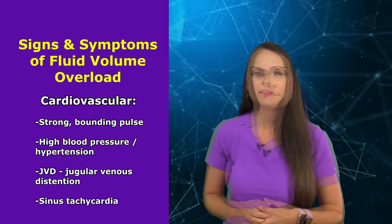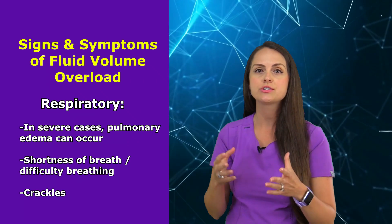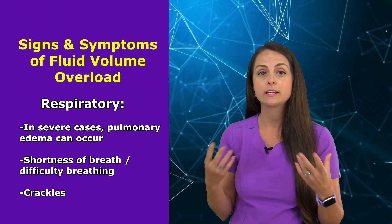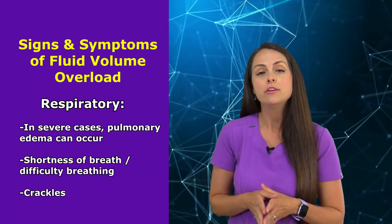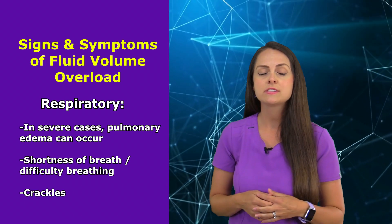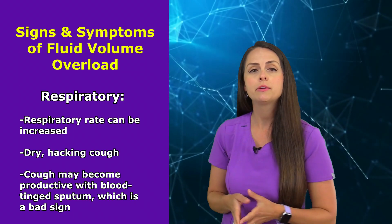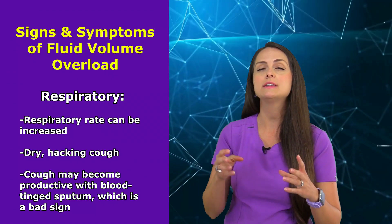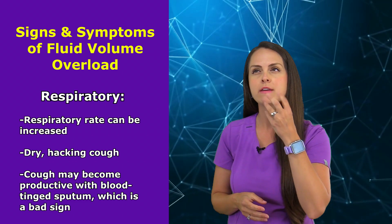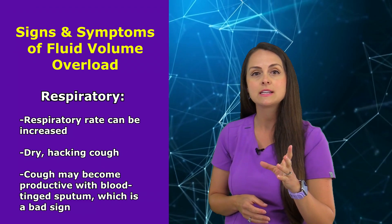The lungs can be majorly affected as fluid starts to leak in and cause pulmonary edema. The patient may have shortness of breath with simple activity, difficulty breathing, and you could hear crackles in the lungs. Their respiratory rate can be increased, and they can have a dry, hacking cough. If that cough becomes productive — producing foamy, frothy, blood-tinged sputum — that signals flash pulmonary edema and the patient needs immediate treatment.